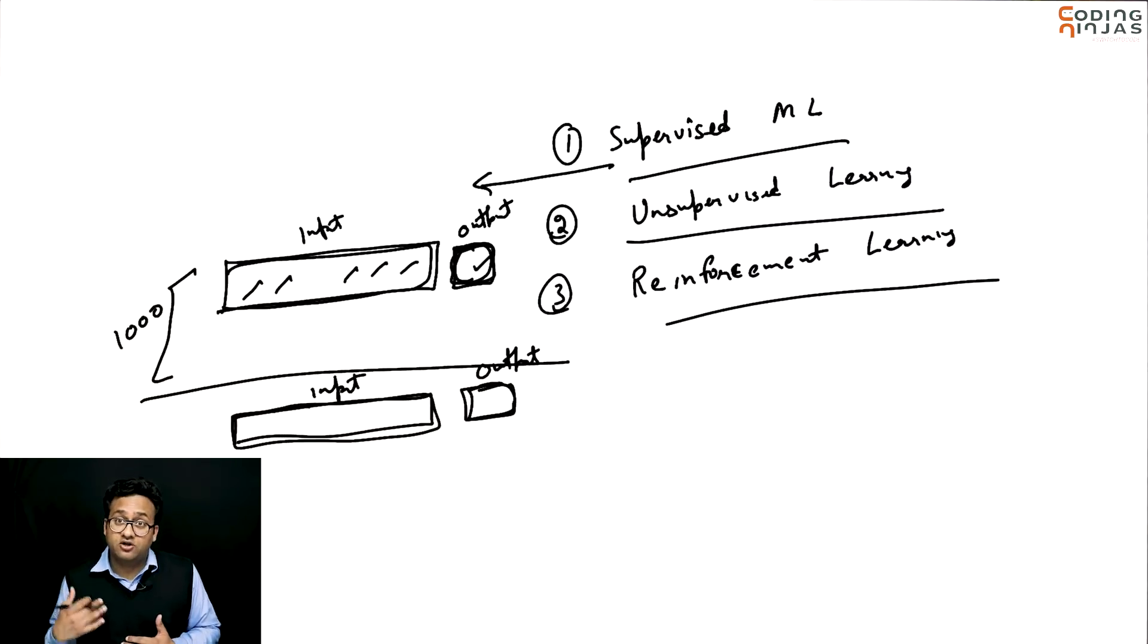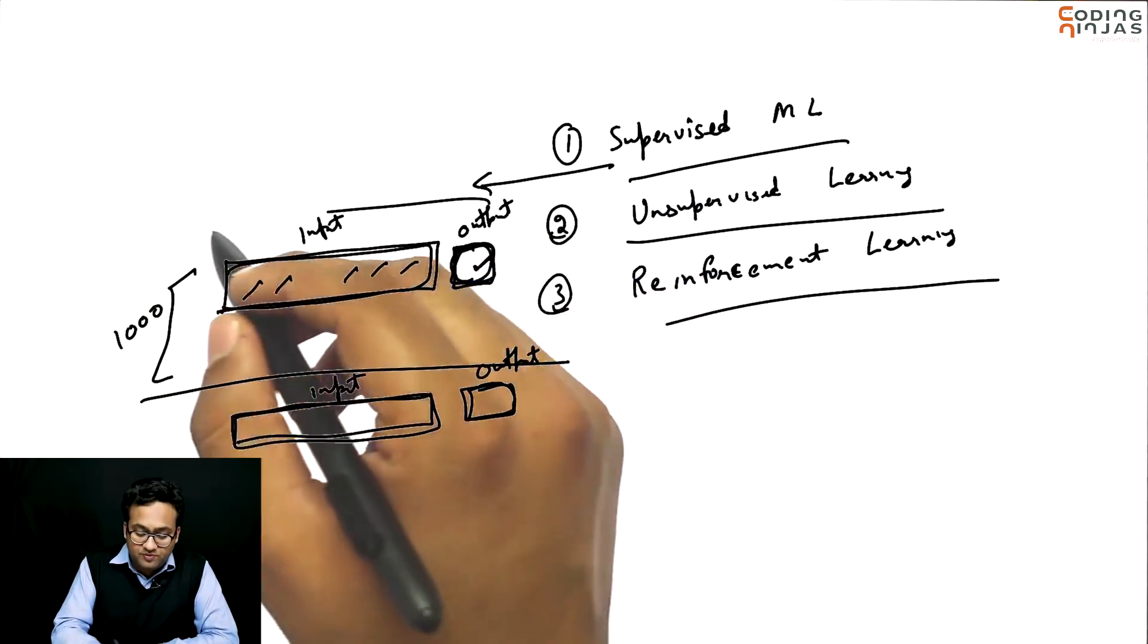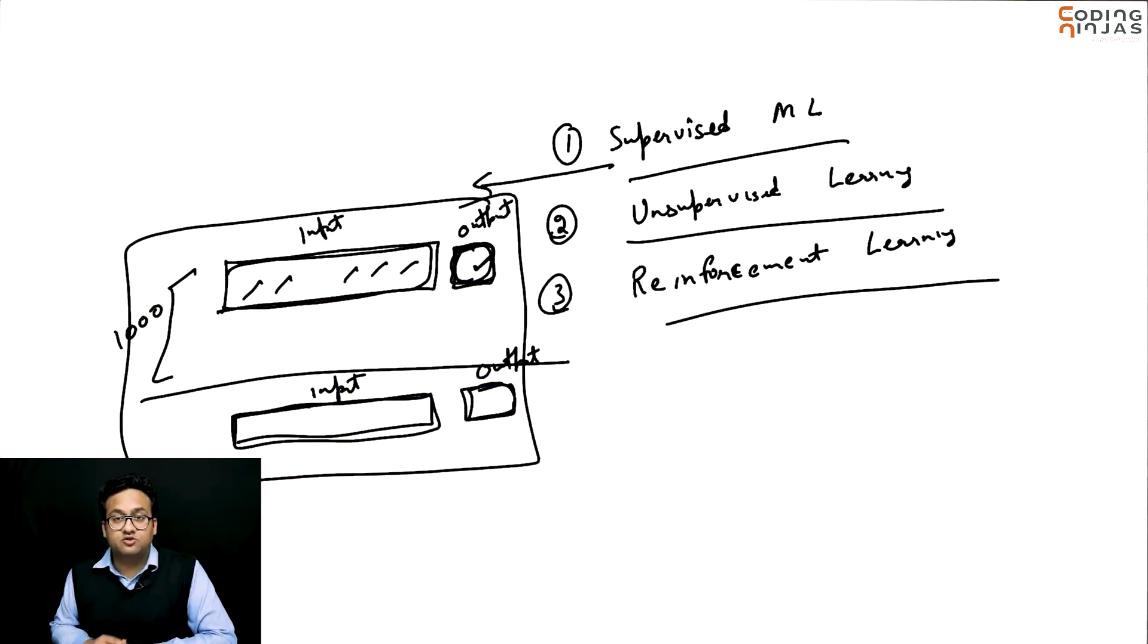We are given a lot of past data on tumors that we have already studied and we know whether they are malignant or benign. Now, we are given a new entry which is basically just the input feature and we are supposed to predict whether it is malignant or not. That is again a supervised learning problem because the input data, the past experience that you are given has a clear demarked output.